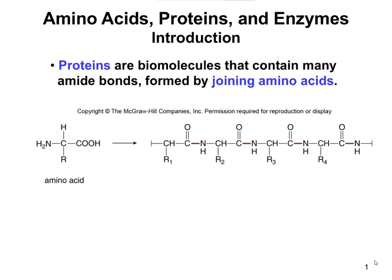Chapter 16 talks about proteins, specifically amino acids, proteins, and enzymes. Amino acids are the building blocks for proteins, and enzymes are a specific type of protein that do functions physiologically in our body — they help make processes work.